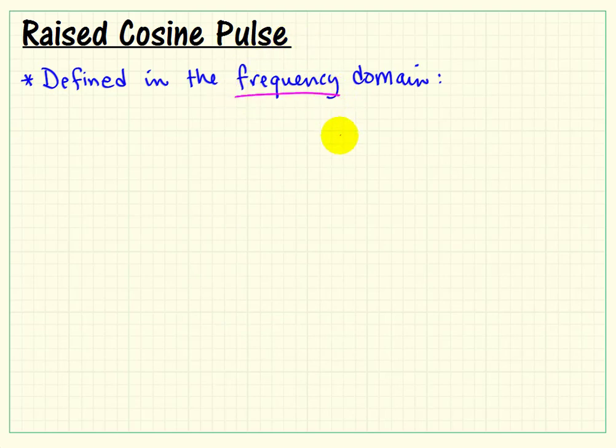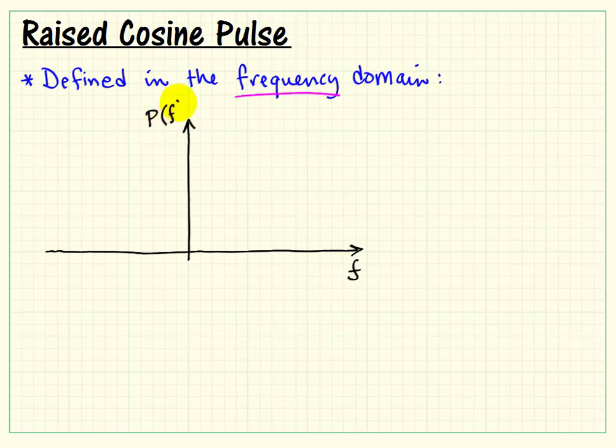Let's consider the raised cosine pulse, one of the most important pulse shapes in digital communication systems. The raised cosine pulse is actually defined in the frequency domain, and we'll see how that notion of raised and cosine actually shows up in the definition.